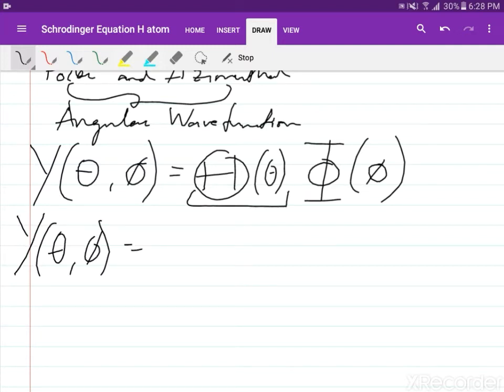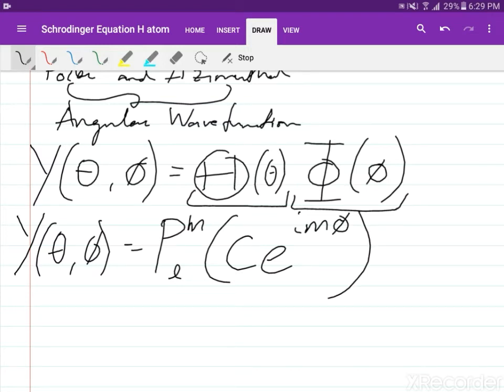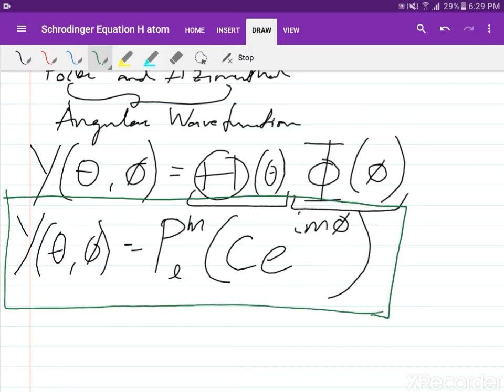This is our polar part, which has a solution associated with the Legendre polynomials. Our azimuthal part has a solution which is an exponential function: C times e raised to i times M times phi. This is our angular part of the wave function.